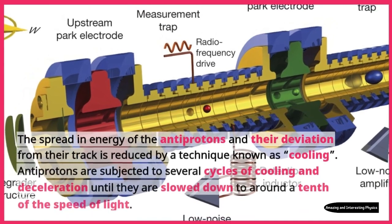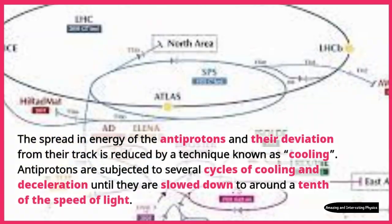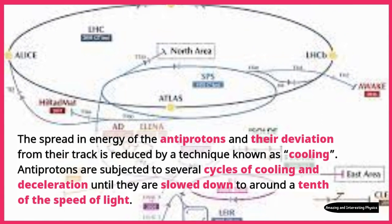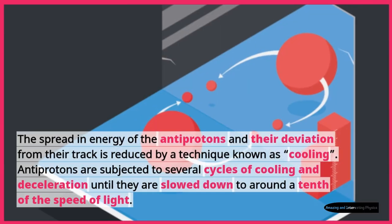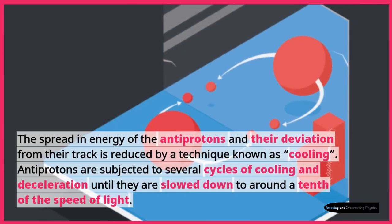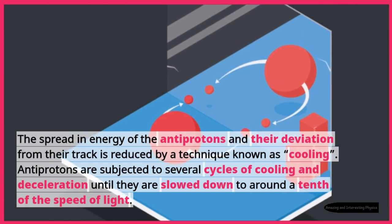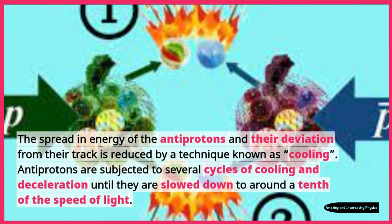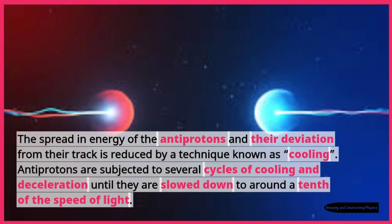The spread in energy of the antiprotons and their deviation from their track is reduced by a technique known as cooling. Antiprotons are subjected to several cycles of cooling and deceleration until they are slowed down to around a tenth of the speed of light.